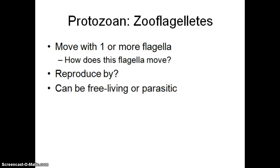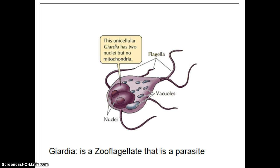Here's an example of a zooflagellate: they move with flagella, reproduce asexually, and can be free-living or parasitic. Giardia, for instance, can be found in untreated water — in New Hampshire, for example. If you drink contaminated water you could get this protist, which attacks the intestines as a parasite and can cause severe diarrhea. That's one type of animal-like protist that moves with flagella.